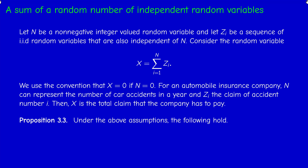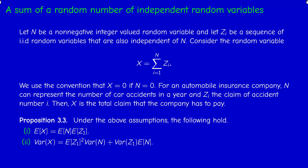Let us establish two important properties. In general, the distribution of X is hard to compute from the distribution of Z_i, which is why we usually do Monte Carlo simulations. However, there are two important properties giving the expectation and the variance. The first equation is known as Wald's equation: the expected value of X is simply the product of the expected value of N and any one of the i.i.d. random variables Z_i. There is a similar formula for the variance: the variance of X equals the square of E[Z₁] times Var(N) plus Var(Z₁) times E[N].